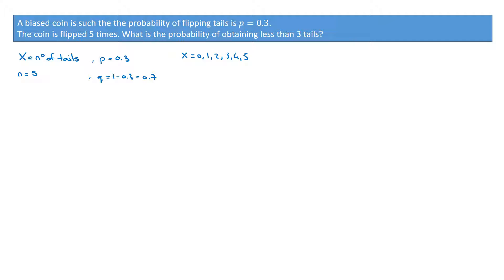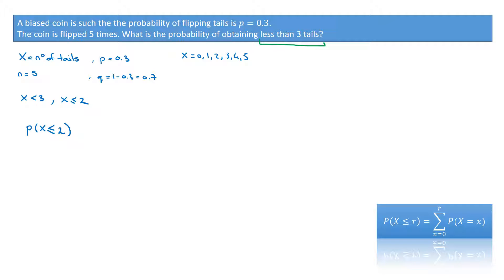We're interested in the probability of obtaining less than 3 tails. Since X can be 0, 1, 2, 3, 4, or 5, for X to be less than 3 means X has to be less than or equal to 2. So the probability we're looking for is P(X ≤ 2). Using the cumulative distribution formula and replacing the values, this equals the sum from x equals 0 up to 2 of P(X = x).